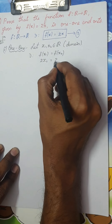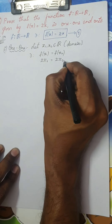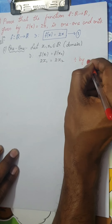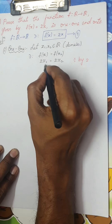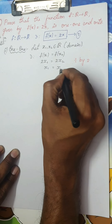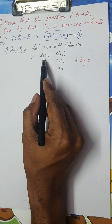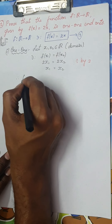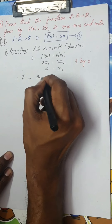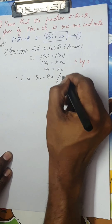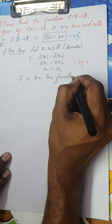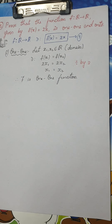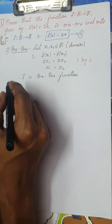Since f(x) = 2x, f(x1) = 2x1 and f(x2) = 2x2. If you divide both sides by 2, you get x1 = x2. I started with f(x1) = f(x2) and arrived at x1 = x2. Therefore, f is a 1-1 function. As I told you, this is a very basic question. If they ask you in the examination, 5 marks is like a bonus for you.